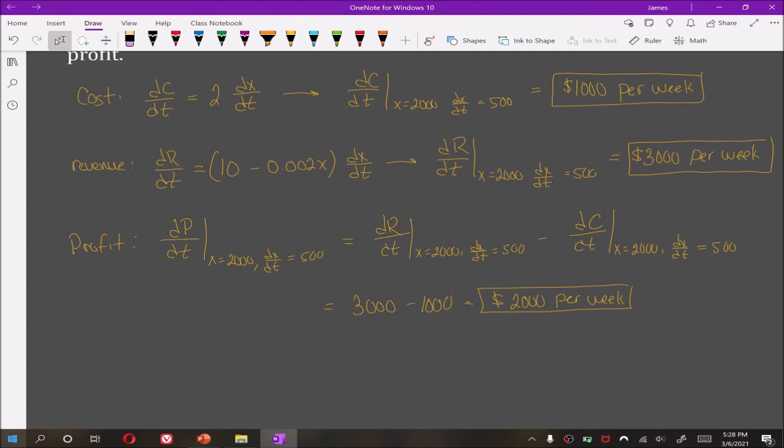When doing a related rates problem, the first thing you should do is draw yourself a picture and label all of the values. Then state what you know, what you want to find, generate your equation, then use implicit differentiation, plug in all of your known values and solve for what you want to find.